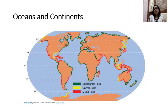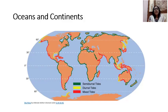Now children, look carefully at the world map on the screen. You will find that some areas in the map are in blue color while others are in brown. The blue areas show water bodies and the brown areas show land masses. A very large land mass is called a continent. A very large body of water is called an ocean.